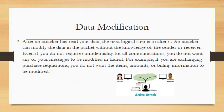After an attacker has read the data, the next step is to alter it — data modification. People usually alter it to make you look bad or to get you in trouble. Also, if you are exchanging purchase requisitions, you do not want items, amounts, or billing information to be modified. This is like when you purchase something through Amazon and you don't want somebody to come in and modify your data.